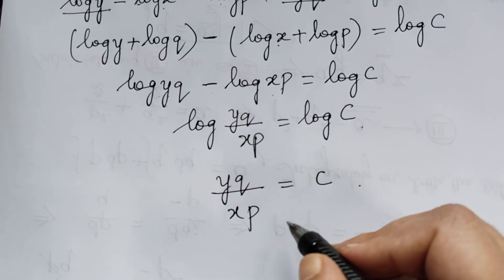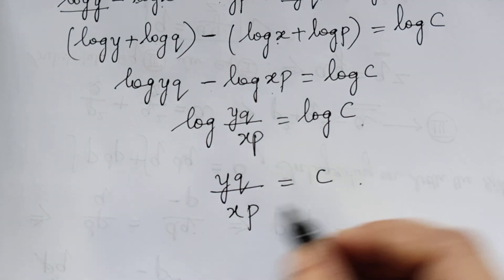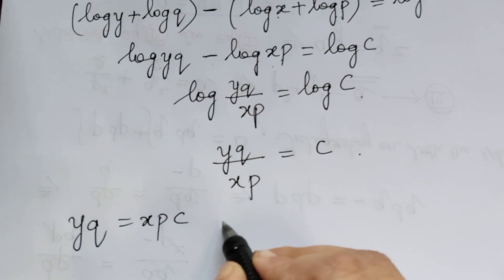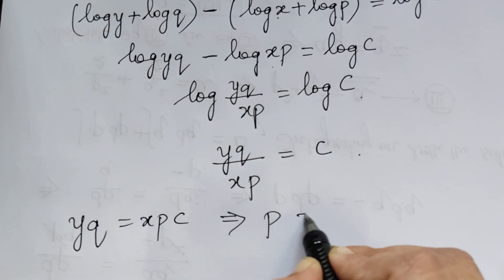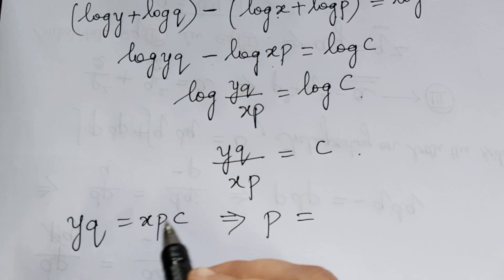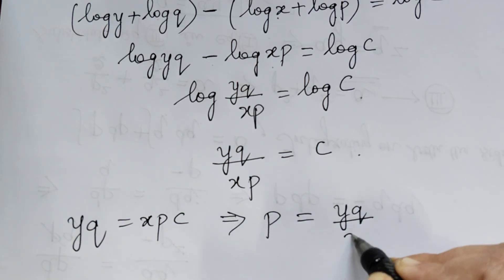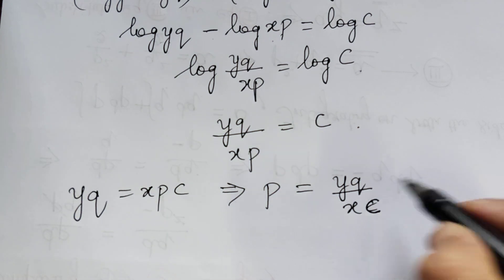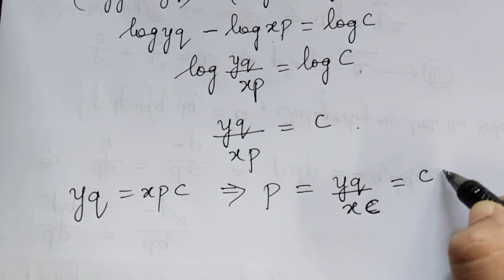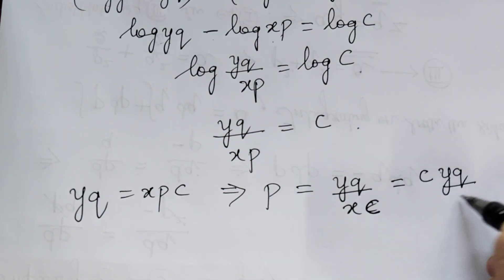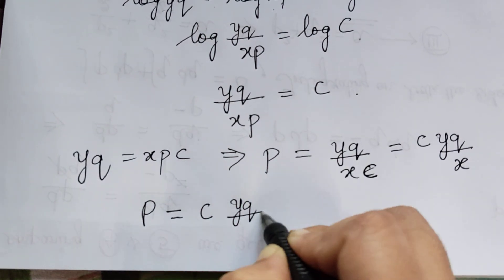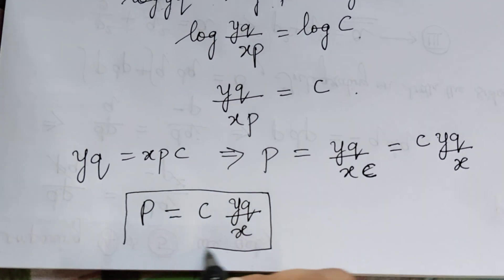From yq = xpc, we get p = yq/(xc). Since 1/c is a constant, we can absorb it and write p = cyq/x. So the value of p is cyq/x.